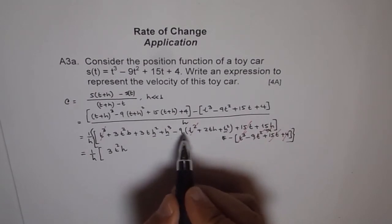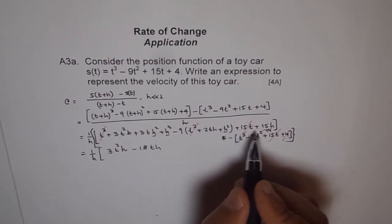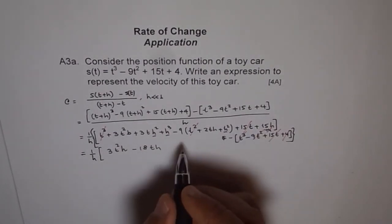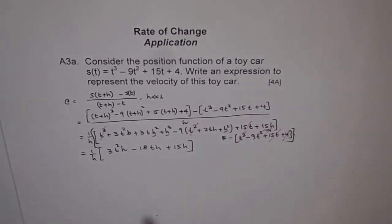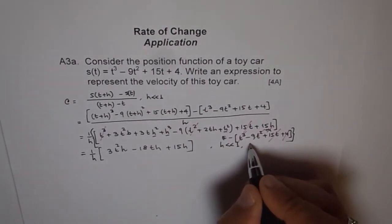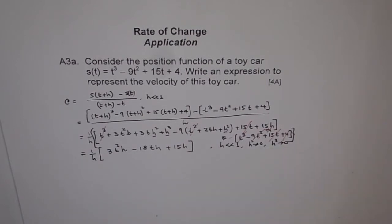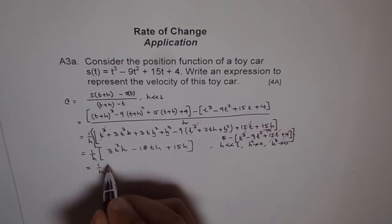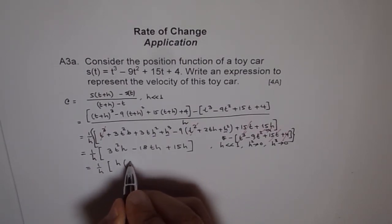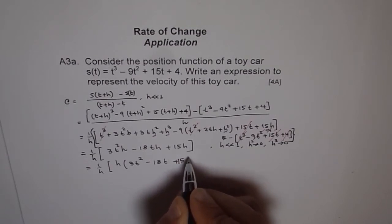And minus 9 times 2 is minus 18th. And then we got plus 15h. That is all. So what we did was, since h is very, very small compared to 1, we assume that h² approaches 0 and h³ approaches 0. So we neglected those terms. That's what we did. Now we got all this. Now what I can do is, I can take h common from all of them. Let me take h common.